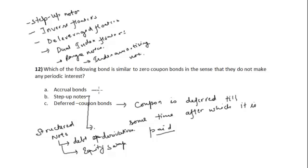However, the accrual bonds are similar to zero coupon bonds in the sense that no coupon is paid until maturity. So in this case the correct option is option A, that the accrual bond is similar to a zero coupon bond in the sense that they do not make any periodic interest.